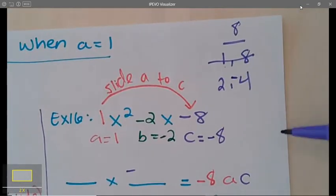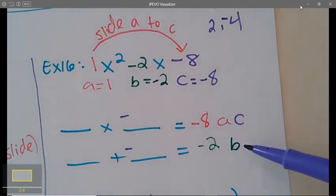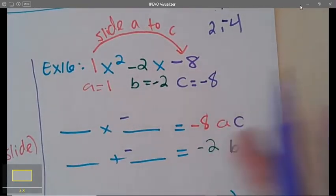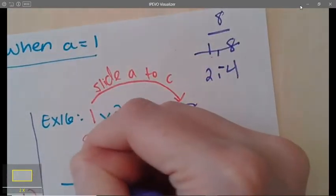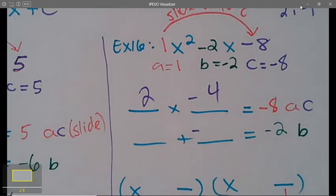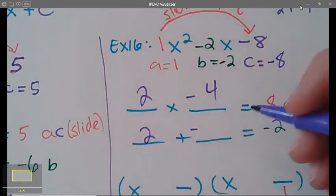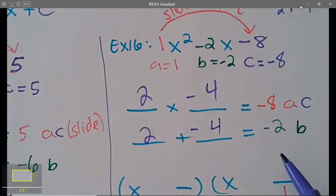So when you guys are coming up with these numbers, sometimes you kind of have to think about what multiplies to be this number, and then after you come up with that you have to ask yourself well what will add to be this number. So I know that 2 times negative 4 does in fact multiply to be negative 8, and 2 plus negative 4 equals negative 2, so these are my magical numbers that are going to work.